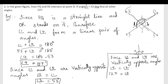To summarize, angle two is 127 degrees, angle three is 53 degrees, and angle four is 127 degrees. These are the required angles.